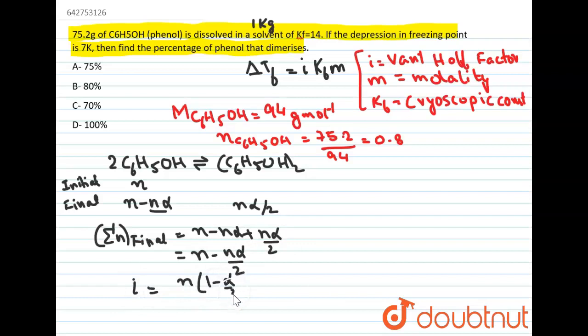So the final number of moles is n minus n alpha by 2. Now we know that vanthoff factor is total number of particles finally, which is n minus n alpha by 2, divided by initial number of particle which is n. So the value of vanthoff factor is 1 minus alpha by 2.